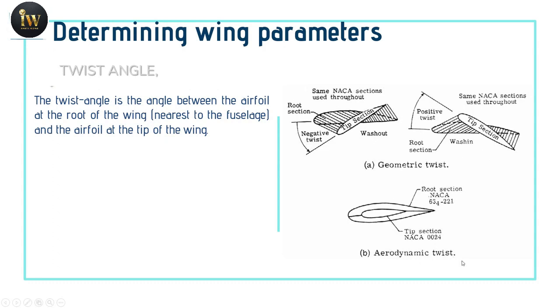But in case of aerodynamic twist, both the root section and the tip section are different airfoil sections. As you can see in the figure, the root chord section has NACA 634221, the thickness is around 21 percent, whereas the tip section has NACA 0024, that means thickness is 24 percent. Due to the difference in airfoil at the root section and the tip section, it creates an automatic twist.